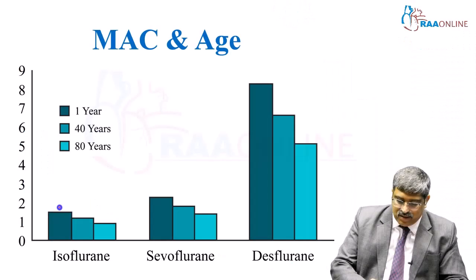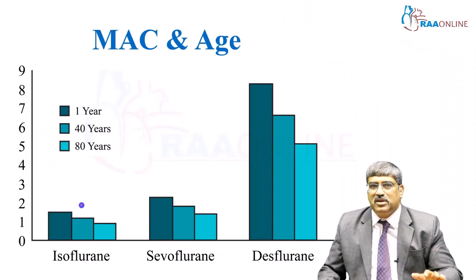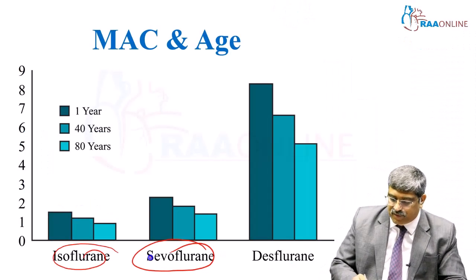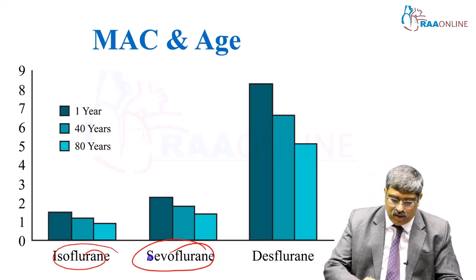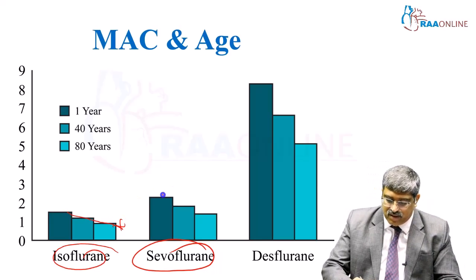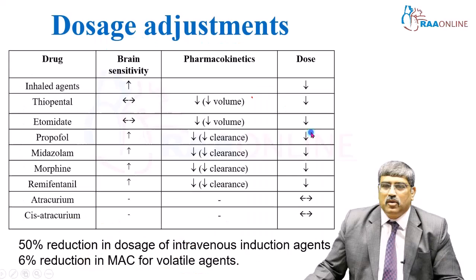Here you can see the MAC of three commonly used agents: isoflurane, sevoflurane, and desflurane. The MAC decreases with increasing age.